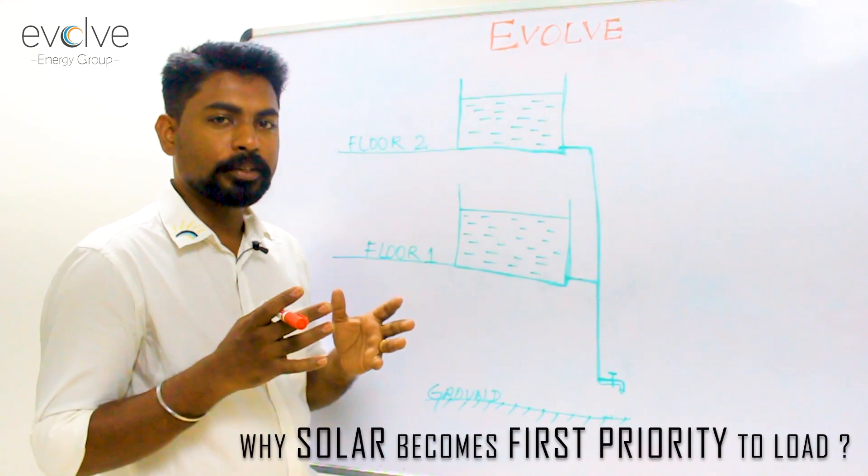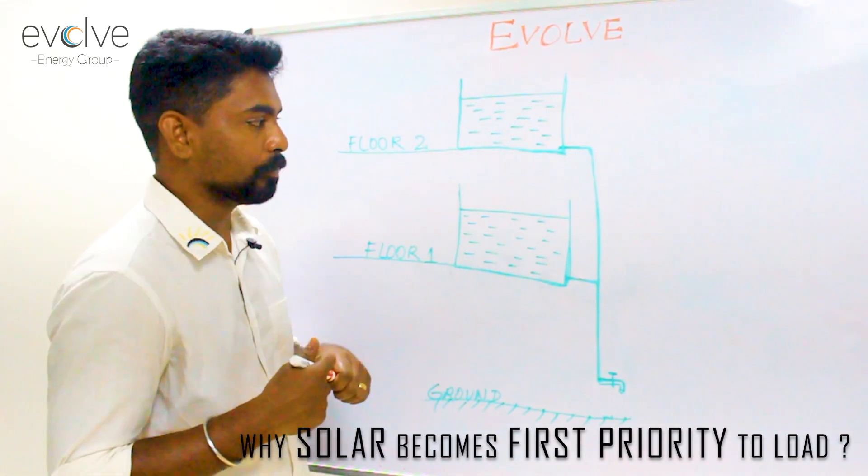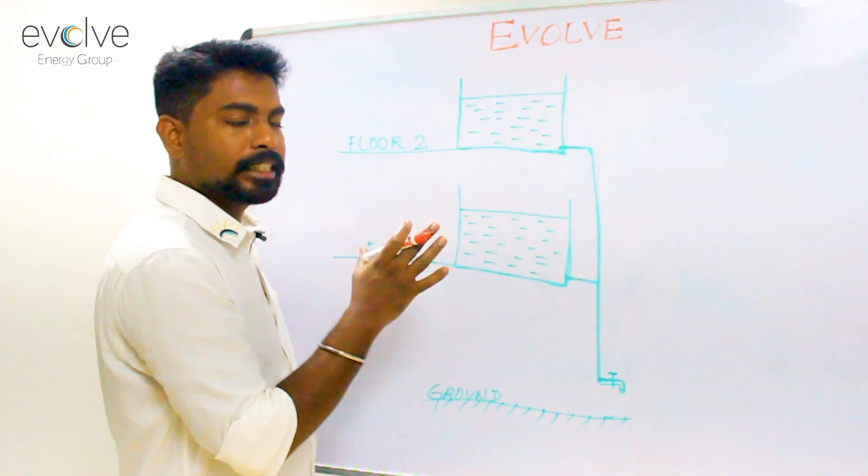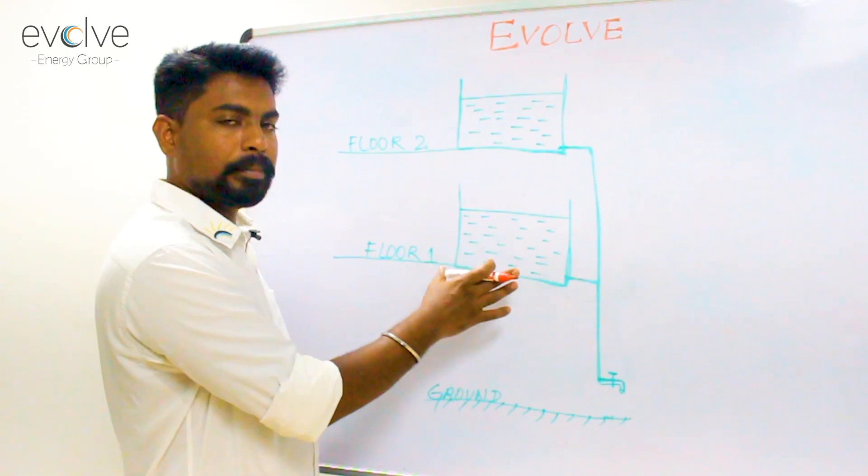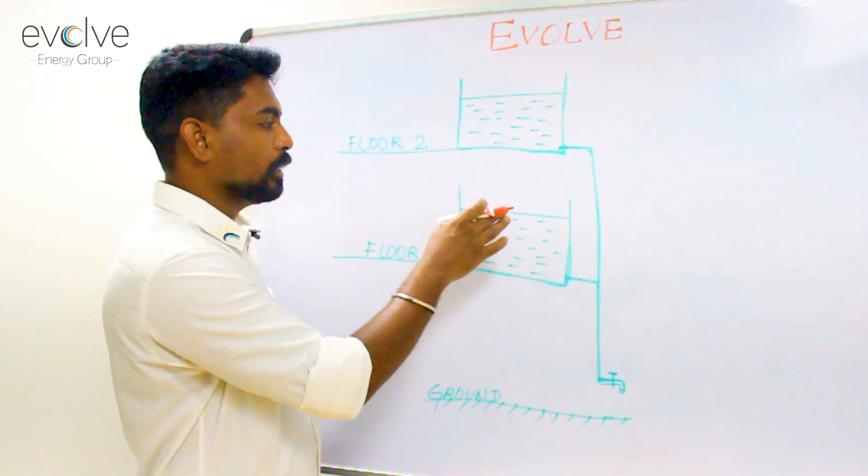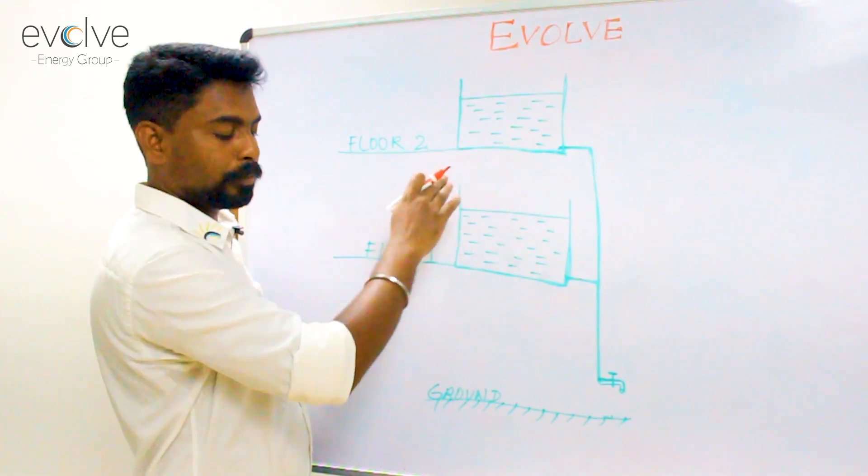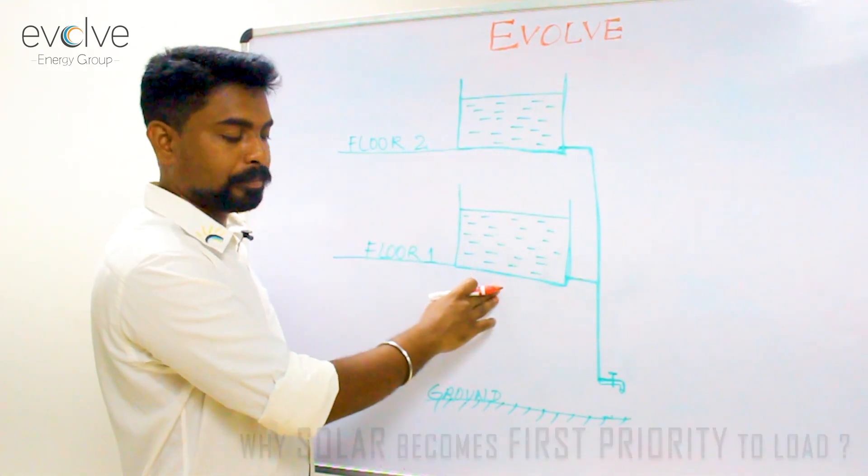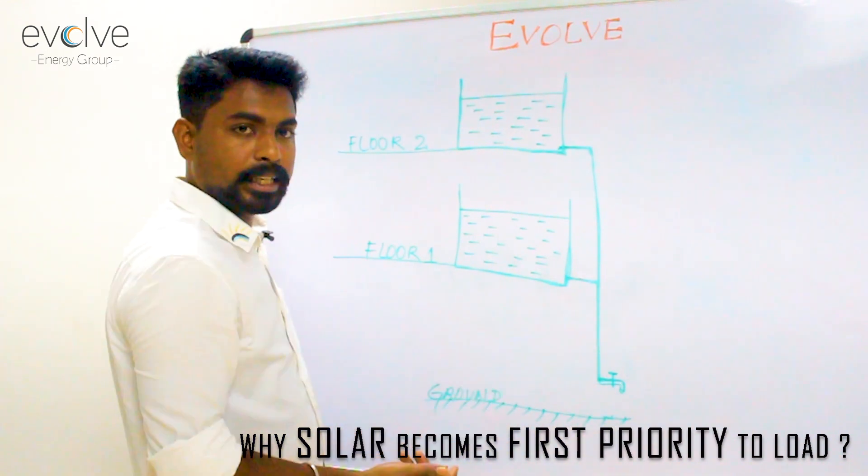Solar becoming the first priority to the load even if there is grid availability in an on-grid system. Explaining it in a simple term, consider two water tanks of same capacity having the same water but they are fixed at different levels. One at floor 2 and one on floor 1. And they are connected to a vent or a water tap which is on the ground floor.